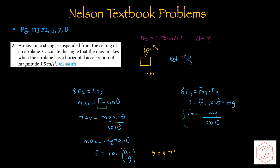Starting off with number 2: a mass on a string is suspended from the ceiling of an airplane. Calculate the angle that the mass makes when the airplane has a horizontal acceleration of magnitude 1.5 m/s². We know the acceleration and we're solving for theta. We're letting upwards and forwards be positive and drawing the free body diagram first. There are only two forces acting: tension at an angle, and gravitational force straight downwards. Since the airplane has a horizontal acceleration to the right, the tension force is at a diagonal in the rightwards/forwards direction, with angle theta that we're solving for.